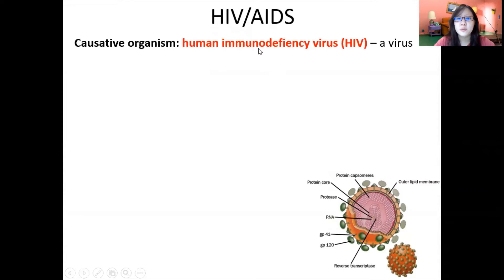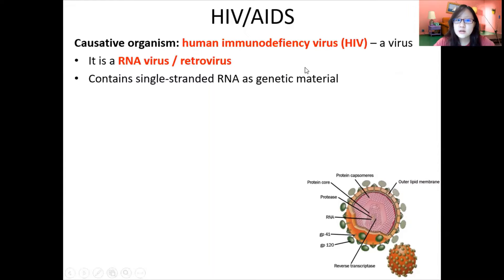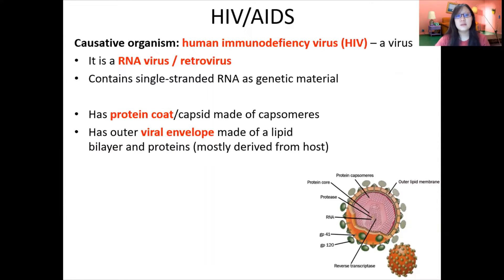HIV AIDS is caused by the human immunodeficiency virus or HIV. It is not just a virus — it is an RNA virus, or what we call a retrovirus. It contains single-stranded RNA as genetic material. Outside the RNA there is the protein coat, and then outside of that there is a lipid bilayer or a viral envelope.